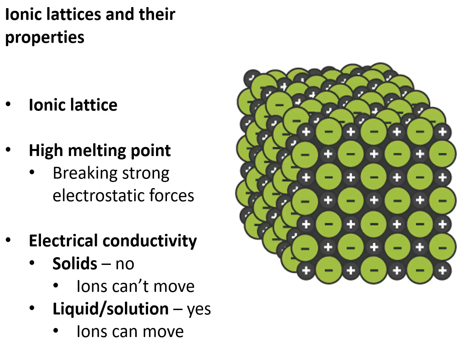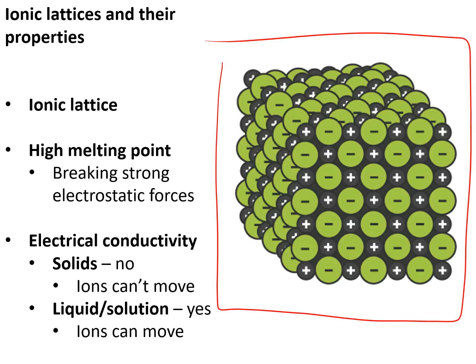Ionic compounds form a lattice structure — a three-dimensional repeating pattern of ions alternating positive, negative, positive, negative. They have a high melting point because melting requires breaking strong electrostatic forces, which takes a lot of heat energy. They do not conduct electricity when solid because the ions cannot move. But if you melt or dissolve them, they do conduct electricity because the ions become free to move.